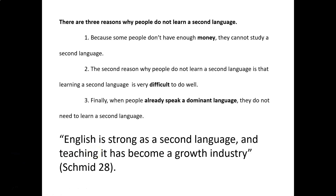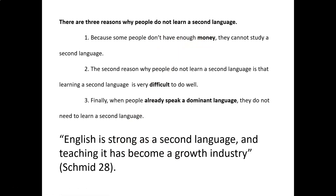Here is a quote: 'English is strong as a second language and teaching it has become a growth industry.' You can tell this is a quote because it has quotation marks at the beginning and the end and it's from another source. The question is: which point do we connect it to? The best connection here is to the money point, because the quote tells us that teaching English around the world is not just educational — it's actually more like a growing industry, which gives us the idea that it costs money.